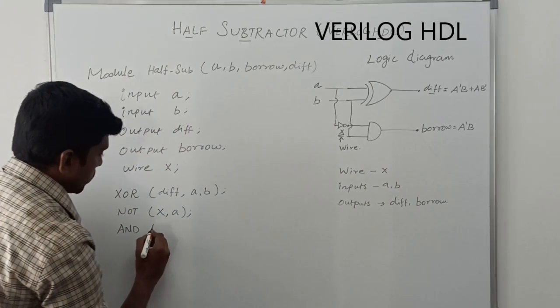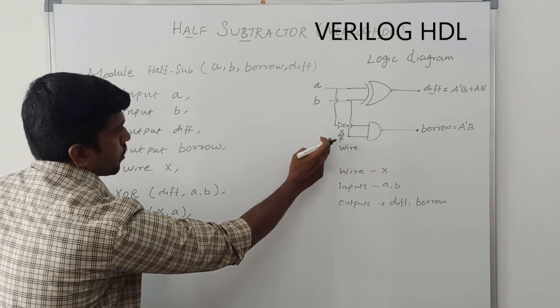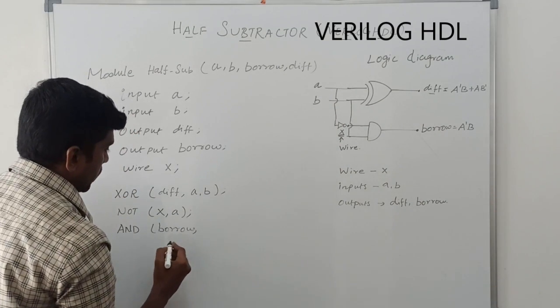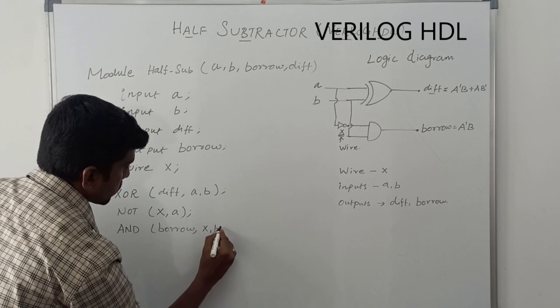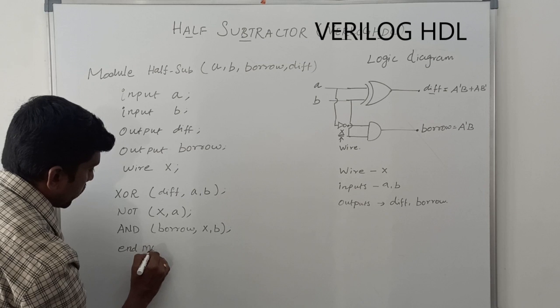Output is borrow. Input is X and B. Finally, you write end module.